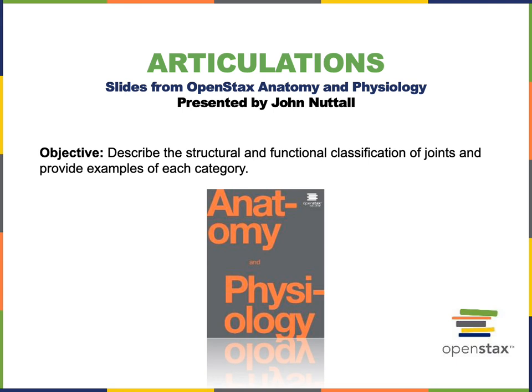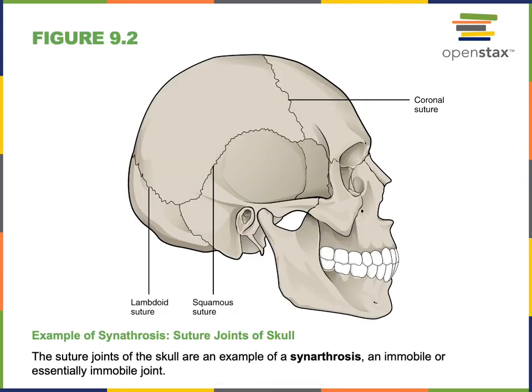In this video I will describe the structural and functional classification of joints and provide examples of each category. A synonym for the word joint is articulation, and we can categorize articulations or joints either functionally or structurally. We'll start looking at the functional categorization — that is, classification of articulations based on their movement.